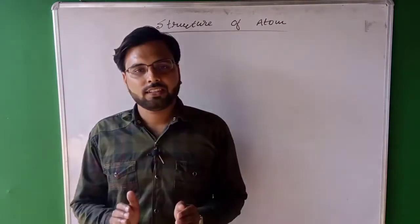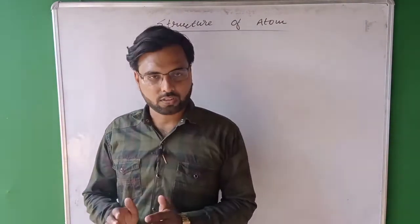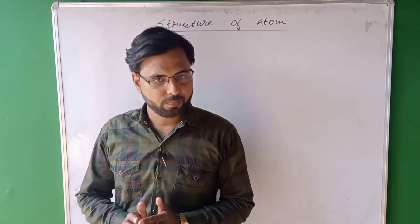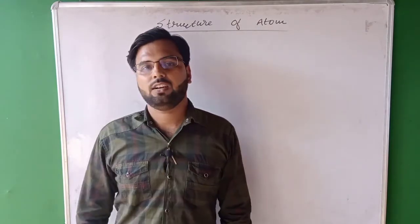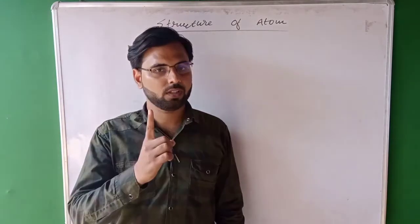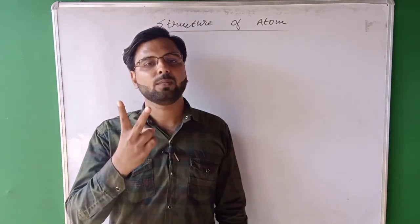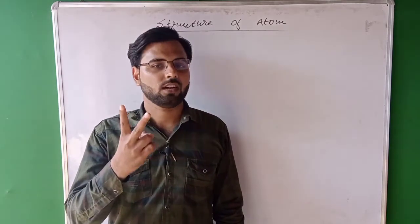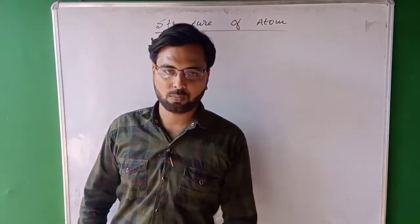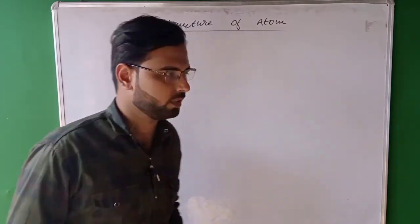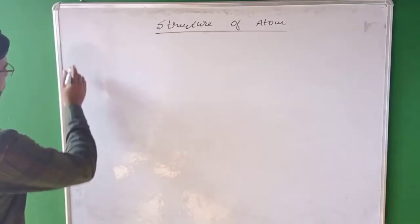Different scientists have given different models about the structure of atom. I will discuss three important models of them. Number one is Thomson model of atom. Number two is Rutherford model of atom, and number three is Bohr model of atom. So let's start with Thomson model of atom.